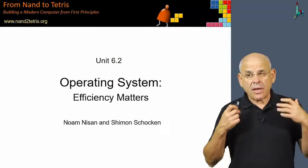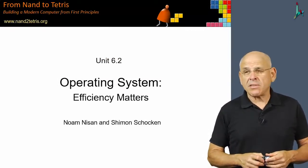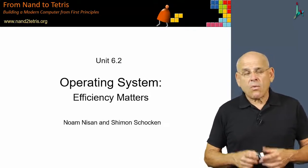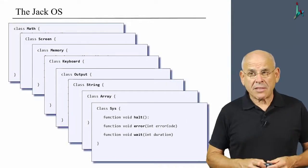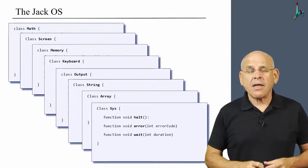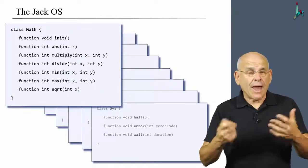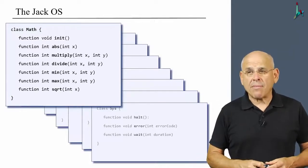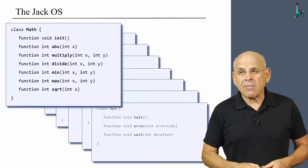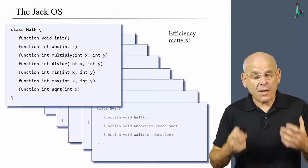As I said in the previous unit, we decided to open the module on operating systems with a discussion of some efficiency matters. So once again, here's the Jack operating system. Let us focus on the top left class, math. We see that math is a collection or library of several widely used mathematical operations. The first thing that I would like to claim is that when it comes to operating systems, efficiency really matters.